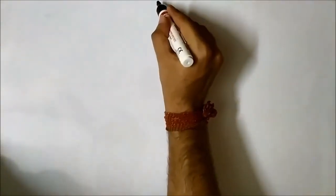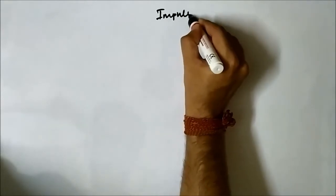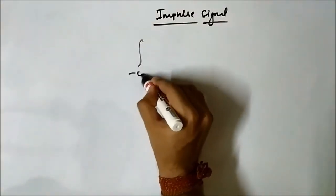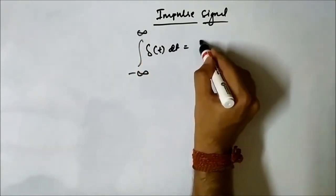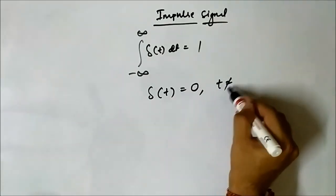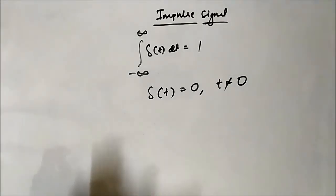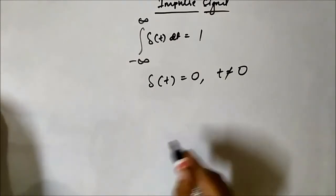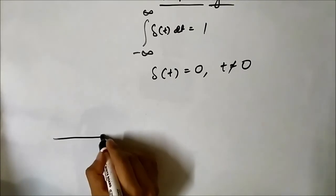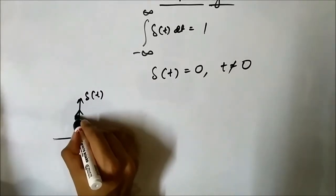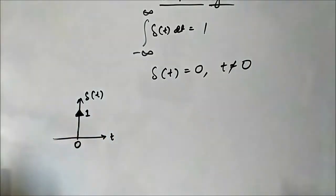We have performed the shifting operation on the step signal and ramp signal. Now let us do the same for the impulse signal. The unit impulse signal is given by delta equals 1 and is also represented at t equals 0. We have already discussed the impulse signal — a video is posted which you can check out. The impulse signal looks like this, with the impulse at t equals 0.